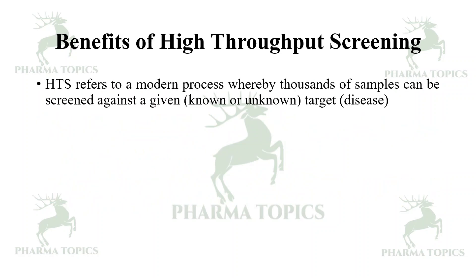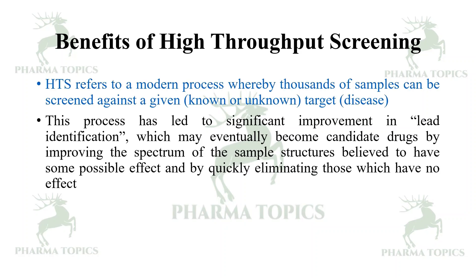The benefits of high throughput screening: HTS refers to a modern process whereby thousands of samples can be screened against a given known or unknown target, which is particularly a disease. The process has led to significant improvement in lead identification or hit identification, which may eventually become candidate drugs, by improving the spectrum of sample structures believed to have some possible effect and quickly eliminating those which do not have the desired activity.